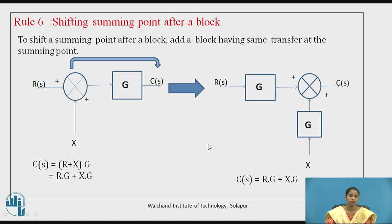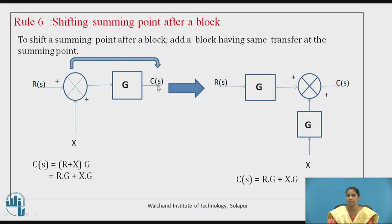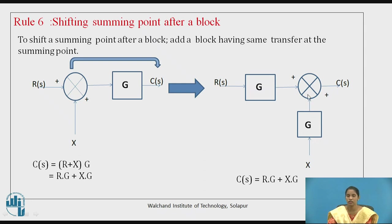Rule number 6 is the reverse — shifting a summing point after a block. The summing point is present before the G block, and I want to shift it after the G block. To shift a summing point after a block, add a block having the same transfer function G at the summing point.